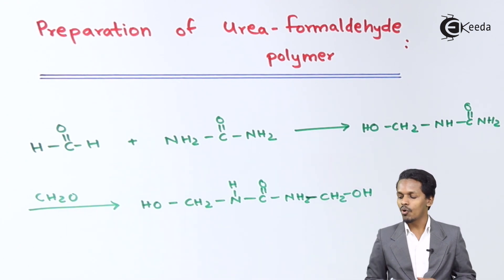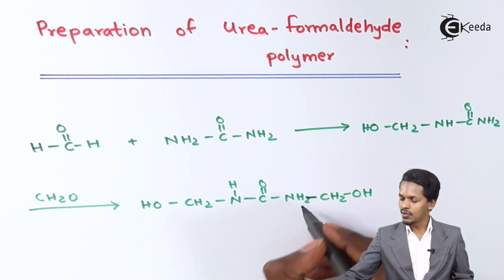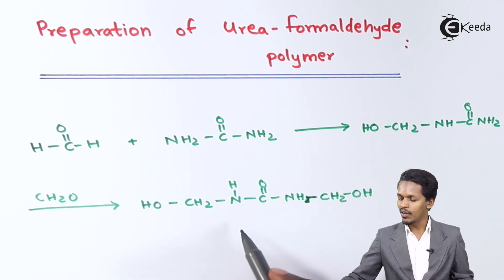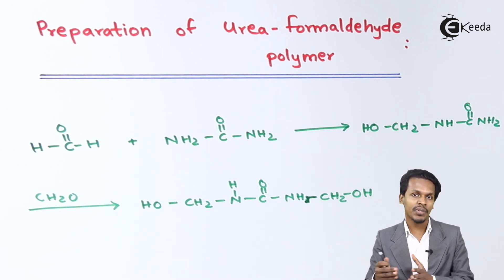So this is the product that we have got, and based on this we could get a polymer that is known as urea-formaldehyde polymer. So now this is what I am going to talk about. Let me introduce the further reaction so that we could understand how the product has been formed.